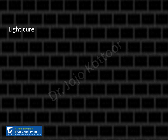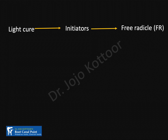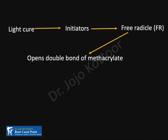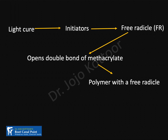So what happens when you light cure a dental composite? Light acts as the activator, and the composite resin has initiators — most commonly camphorquinone or tertiary amine. These initiators produce free radicals. The free radical reacts with the monomer, which is a methacrylate containing a carbon-carbon double bond, opens it up, and reacts with the methacrylate.